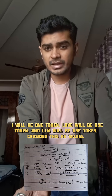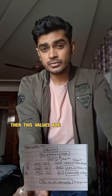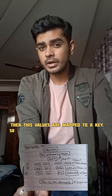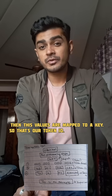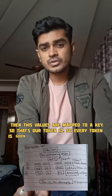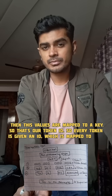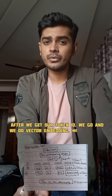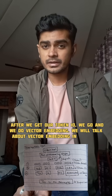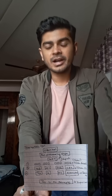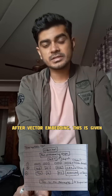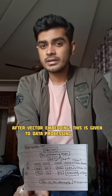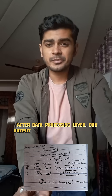Consider these as values. Then these values are mapped to a key — that's our token ID. Every token is given an ID which is mapped to that token. After we get our token ID, we do vector embedding. We will talk about vector embedding in upcoming shorts. After vector embedding, this is given to the data processing layer, and after the data processing layer, our output is generated.